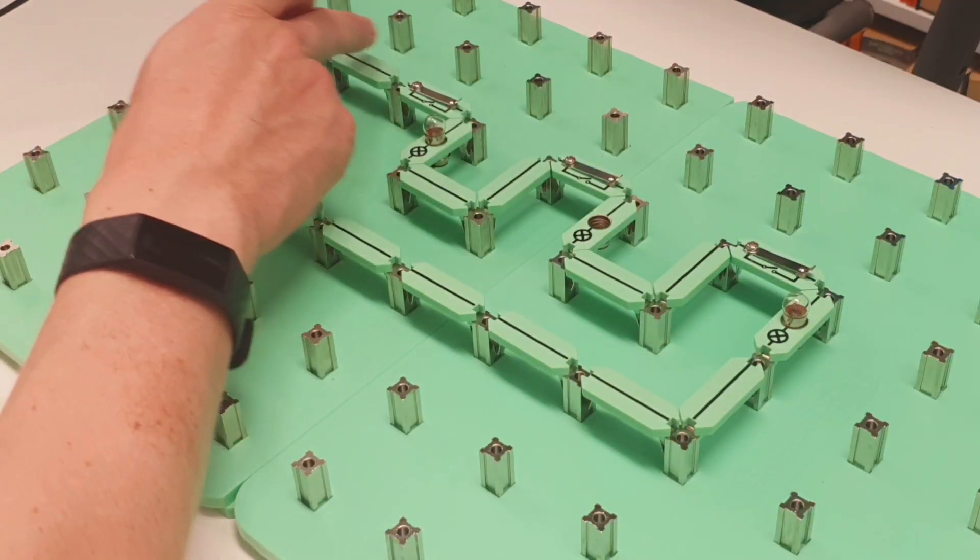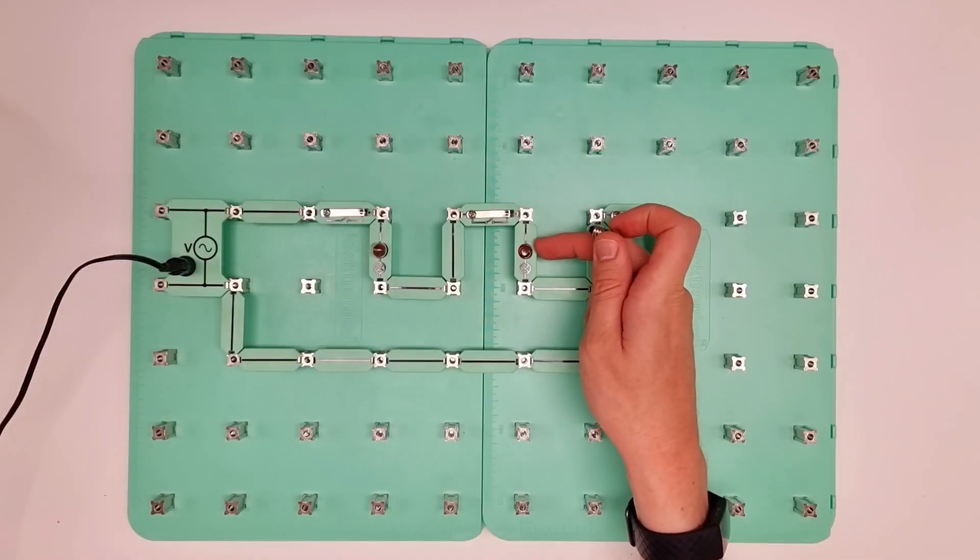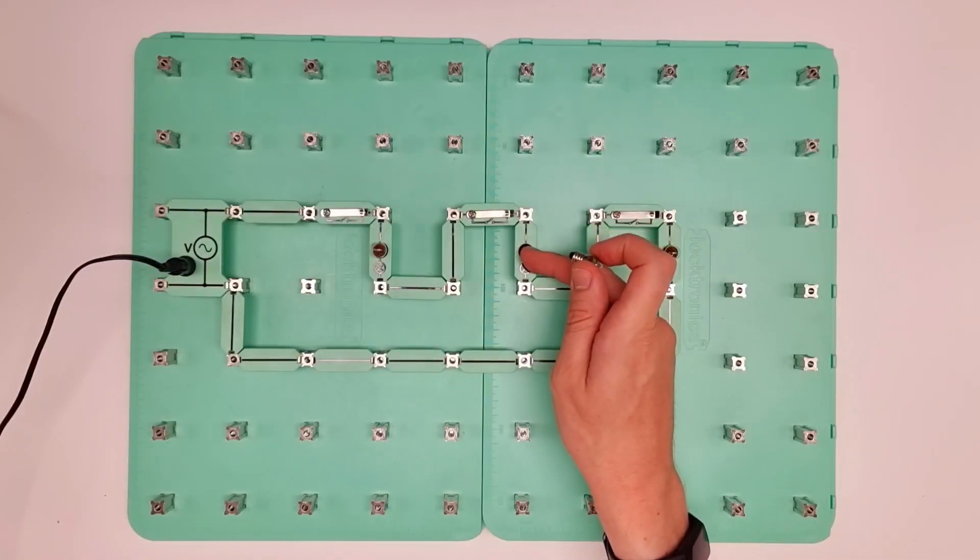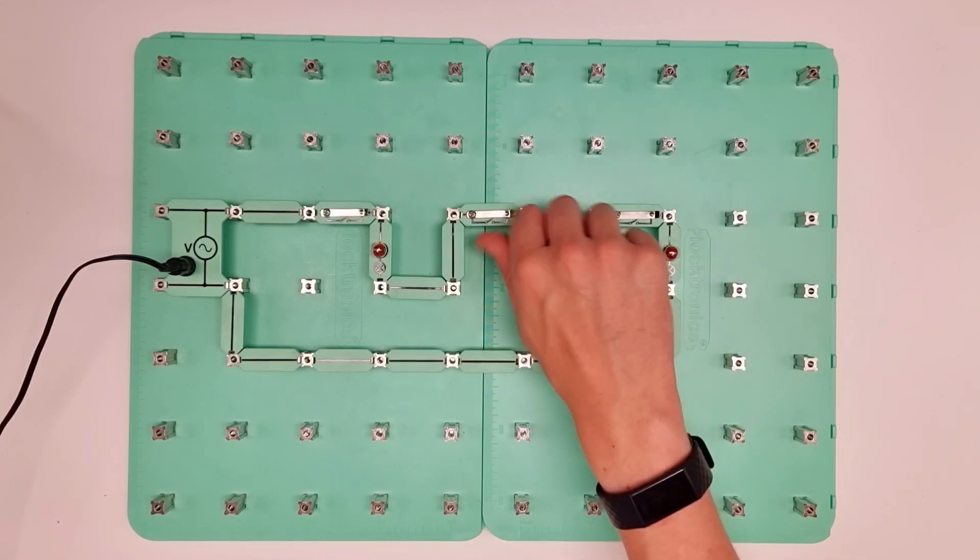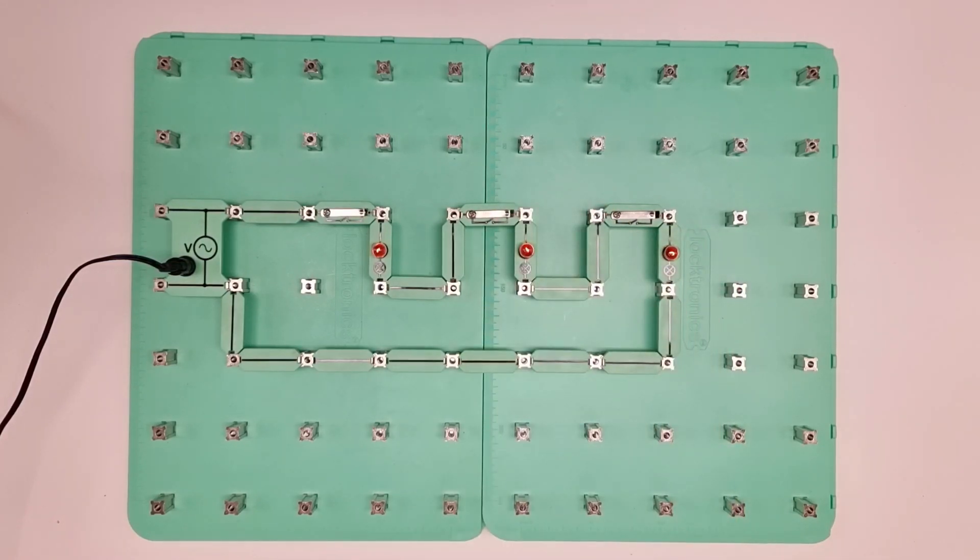That's because the current, as it flows through here, can't get past this point. It can't make the connection across there, and therefore it's not going to work. So I'll plug that back in, and we've got the lamps back on again.